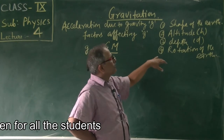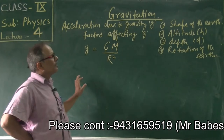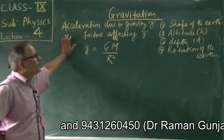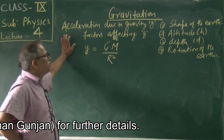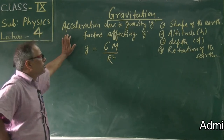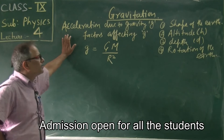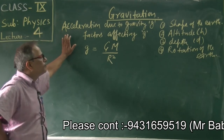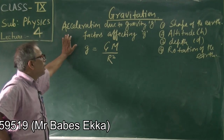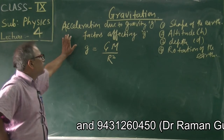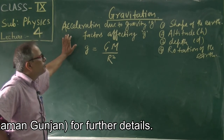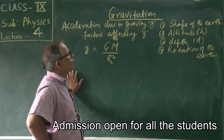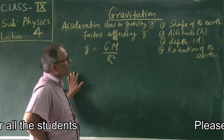Number one: the shape of the earth. The shape of the earth is not perfectly spherical — it is like an orange. The diameter through the poles is less than the diameter in the plane of the equator. So acceleration due to gravity at the poles of the earth is maximum, and it decreases as we go from the poles to the equator.